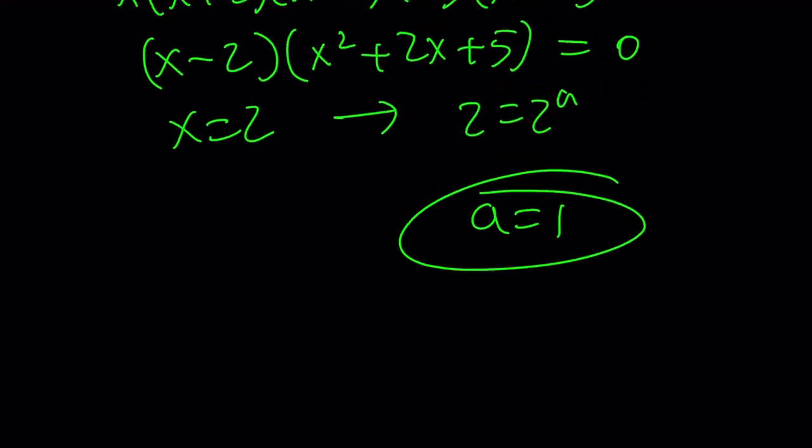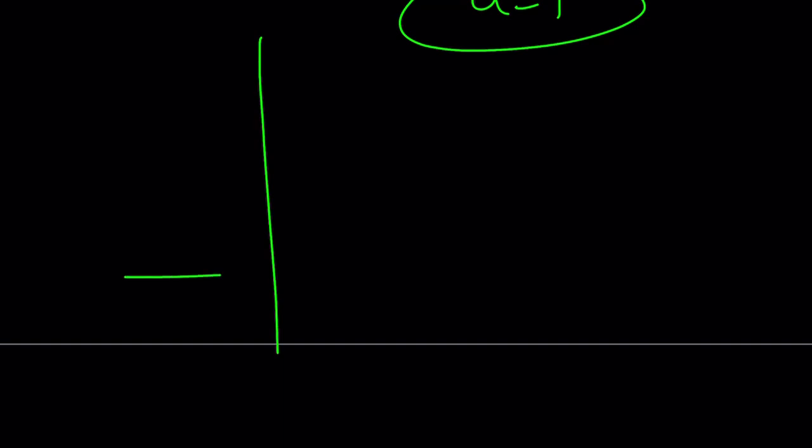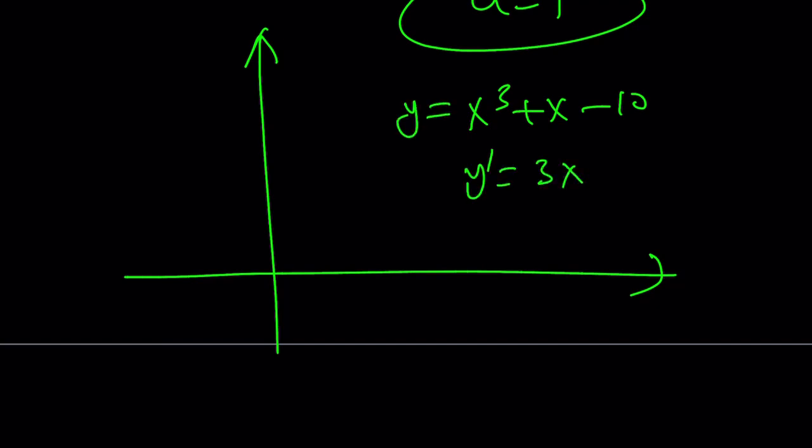Let's go ahead and take a look at the graph. Did I make a graph? Oops, I didn't. Looks like I didn't. But here's the idea. Since this function... Let's take a look. So we have x cubed plus x minus 10. Y equals that. You can go ahead and differentiate it. Y prime is equal to 3x squared plus 1. Set it equal to 0.